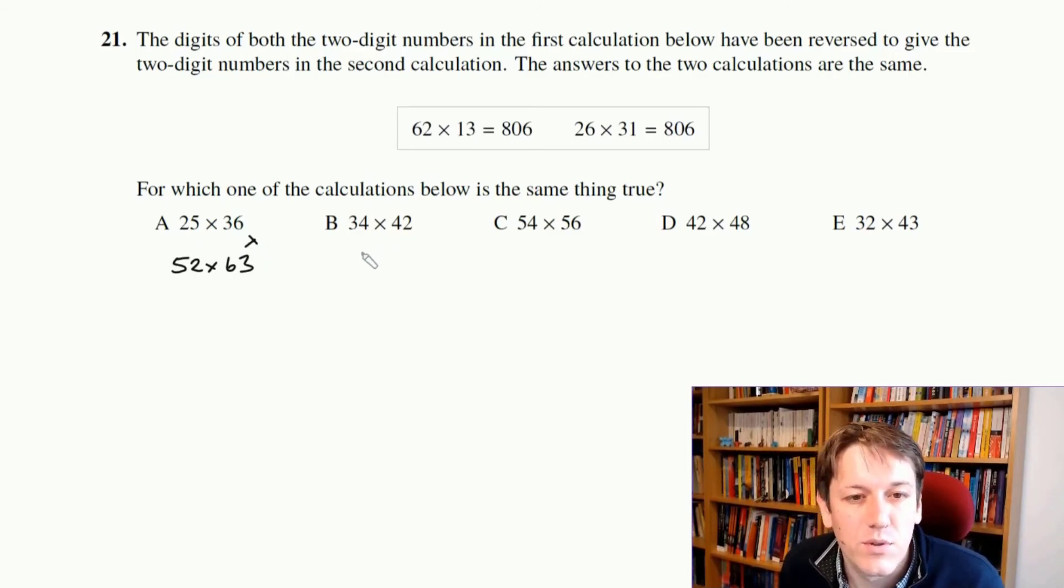34 times 42, that will turn into 43 times 24, 4 times 2 is 8, 3 times 4 is 12, they don't have the same last digit, so they can't be equal. 54 times 56 will become 45 times 65, 4 times 6 is 24, 5 times 5 is 25, don't end in the same last digit, so it can't be that one.